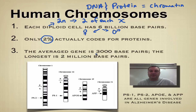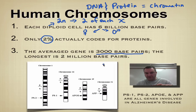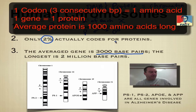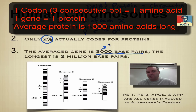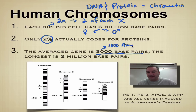The average gene is 3,000 base pairs — so 3,000 A's and T's, C's and G's make it up. Remember, three bases make up a codon. So if you do your math, the average gene is going to have 1,000 amino acids in it. So these are very, very long molecules.